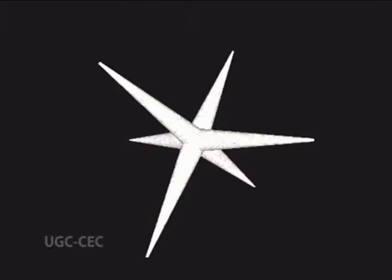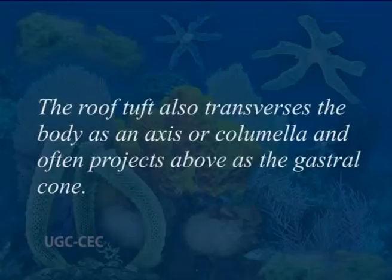Small branching five-rayed spicules extend from all over the body. Besides six-rayed spicules, large and small amphidisc spicules like those of freshwater sponges are also formed. Root spicules are compact, stalk-like, and twisted, giving the appearance of a rope. It is made up of a bundle of very long monactine anchoring spicules. The root tuft also traverses the body as an axis or columella and often projects above as the gastral cone. The middle part of the columella has symbiotic polyps.